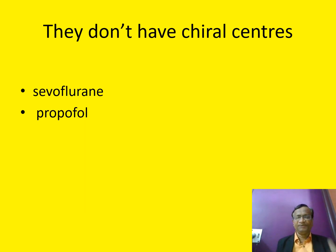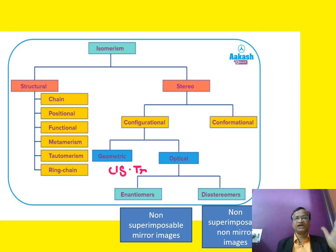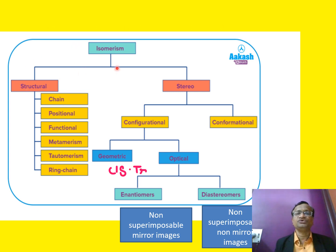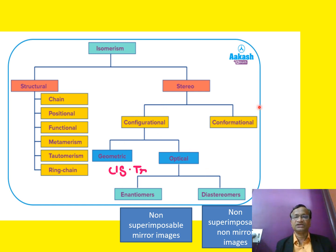Note that sevoflurane and propofol have no chiral centers. To summarize the classification: structural isomerism and stereoisomerism are the two main types, and stereoisomerism is further divided into configurational, geometric, and optical isomerism.